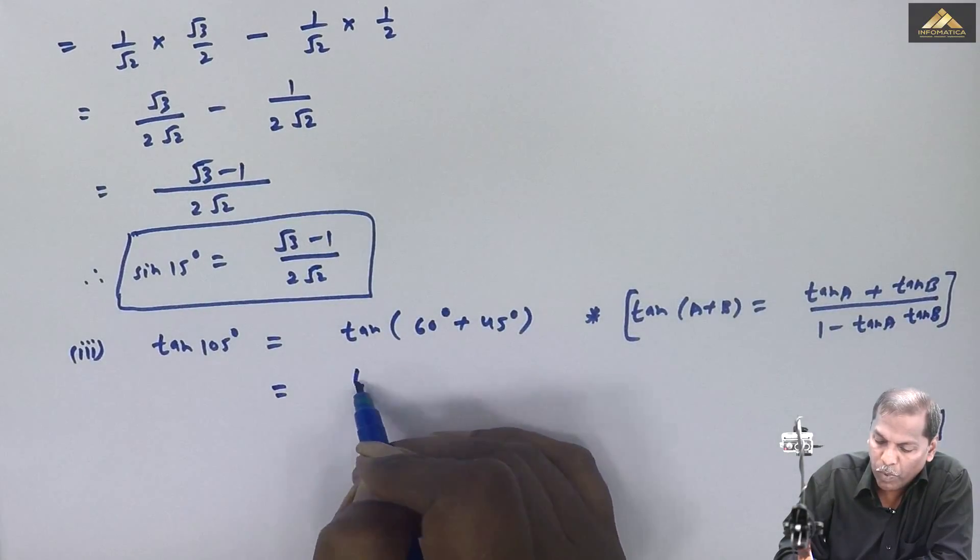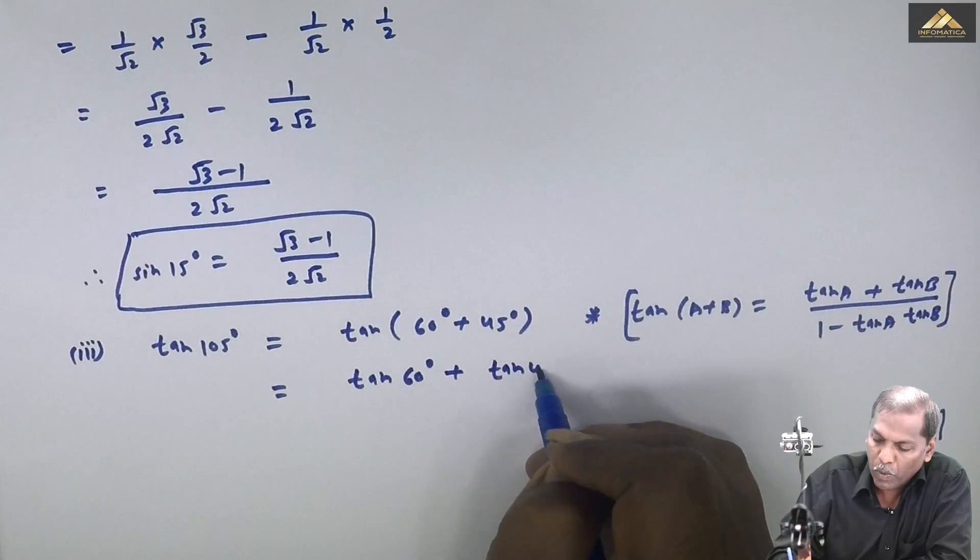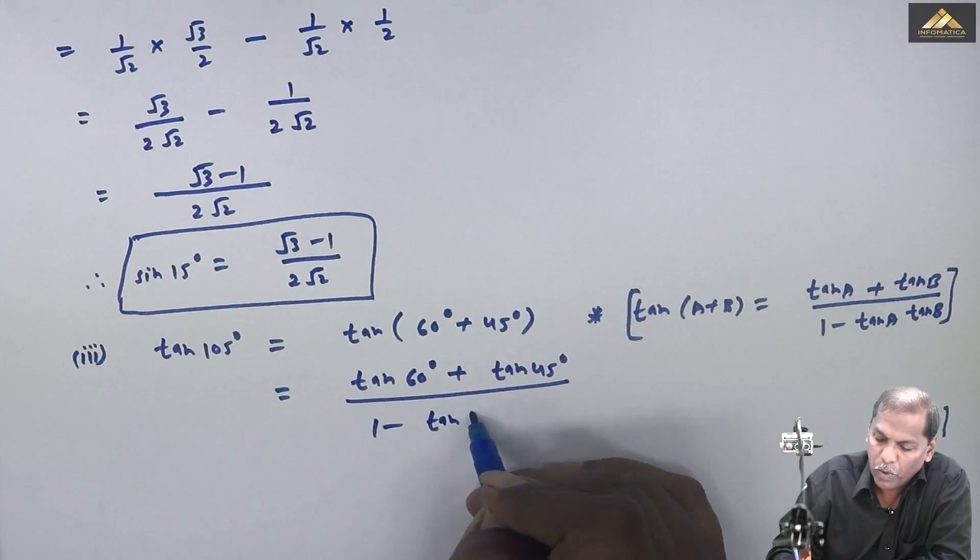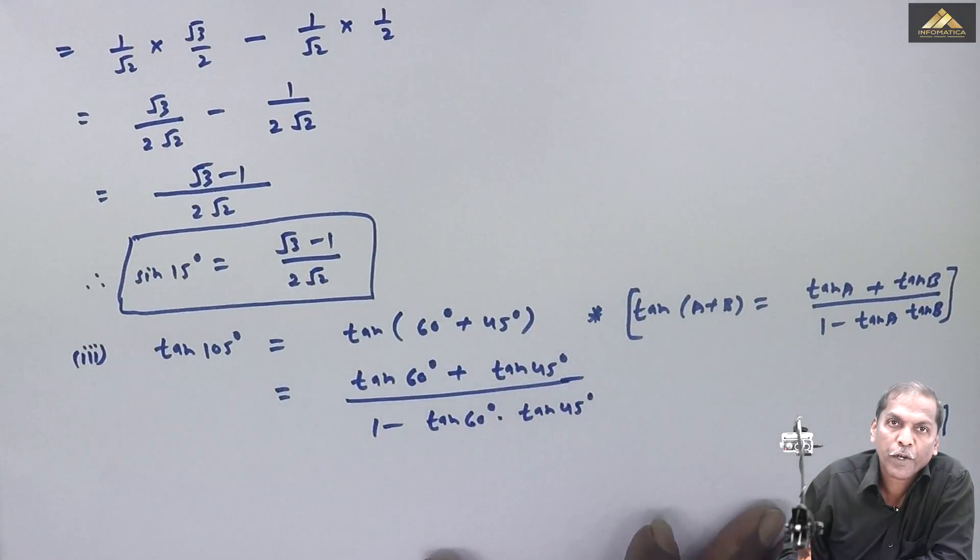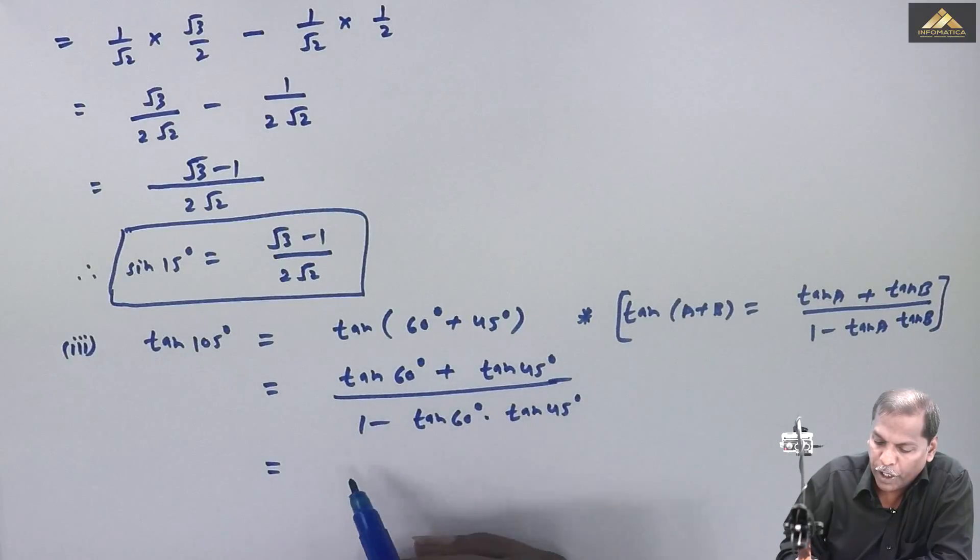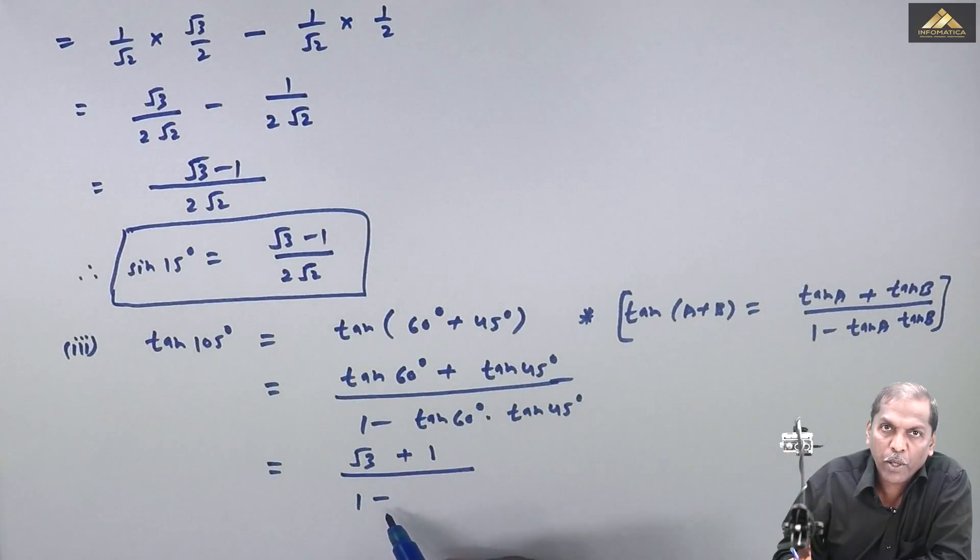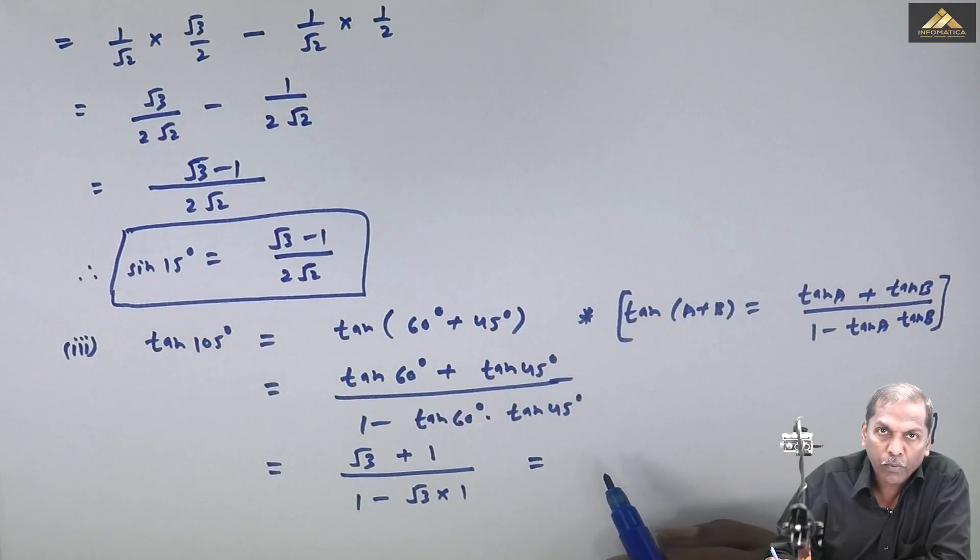So then we get is equal to tan 60 degree plus tan 45 degree upon 1 minus tan 60 degree into tan 45 degree. Is equal to, on further simplifying...